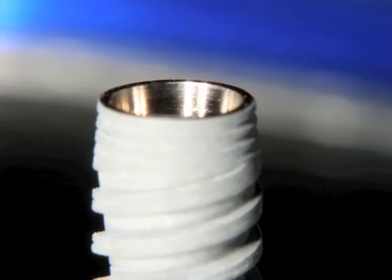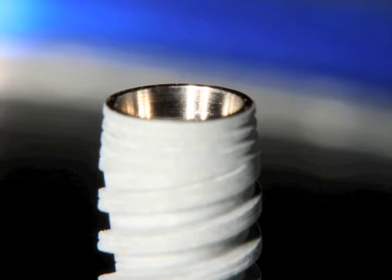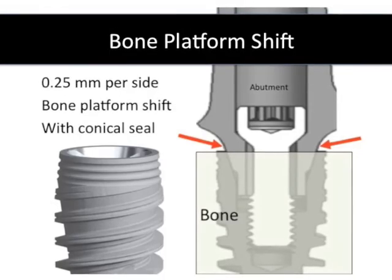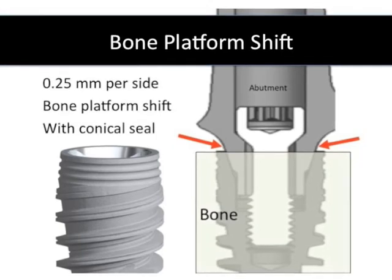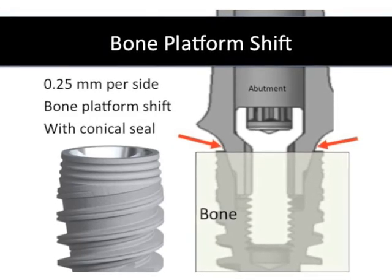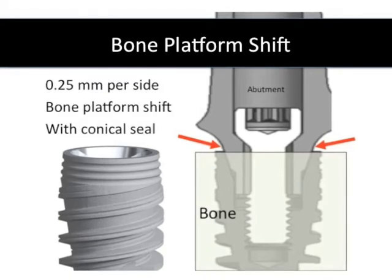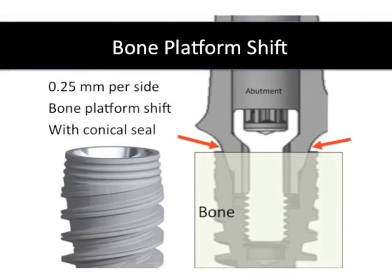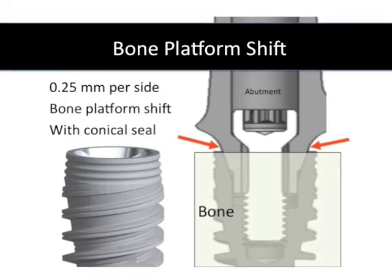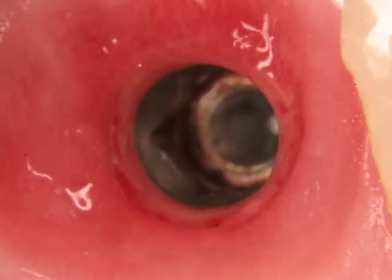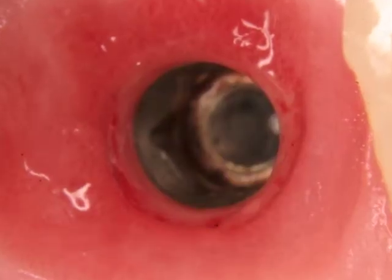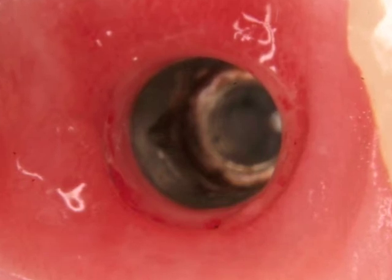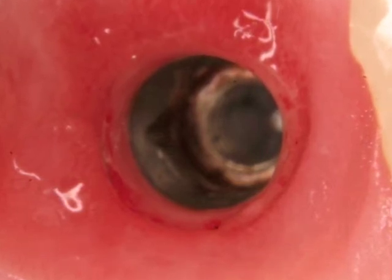If you look at the top of the implant where it connects to the abutments and to the crown, you'll see a very unique connection that has a 0.25 millimeter wide platform shift. So if you add this together, you get a 0.5 millimeter platform shift on top of the implant where the abutment comes into the implant interface. This is important on implants because it allows for healing laterally, so the gingival fibers around implants heal laterally into the abutment interface.